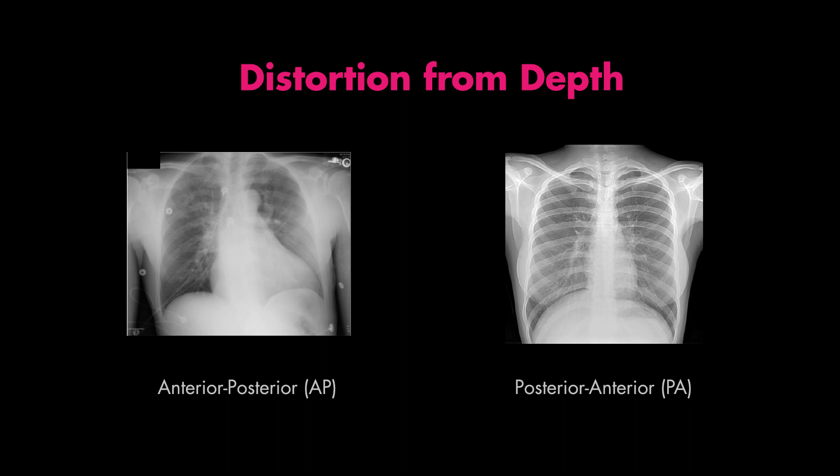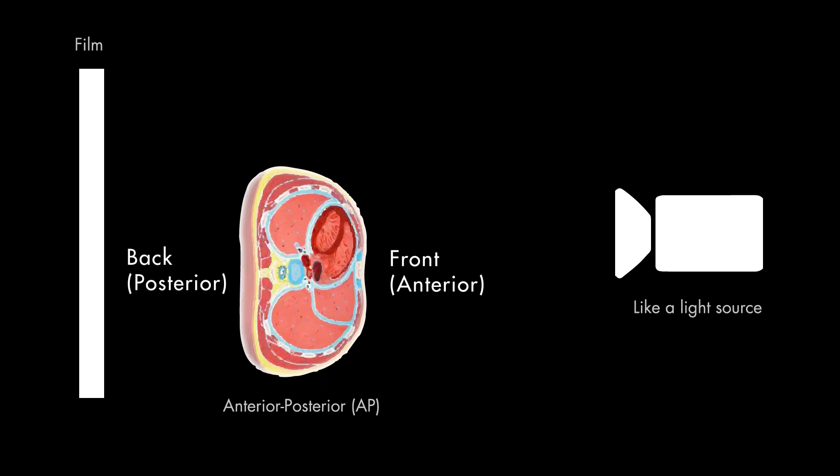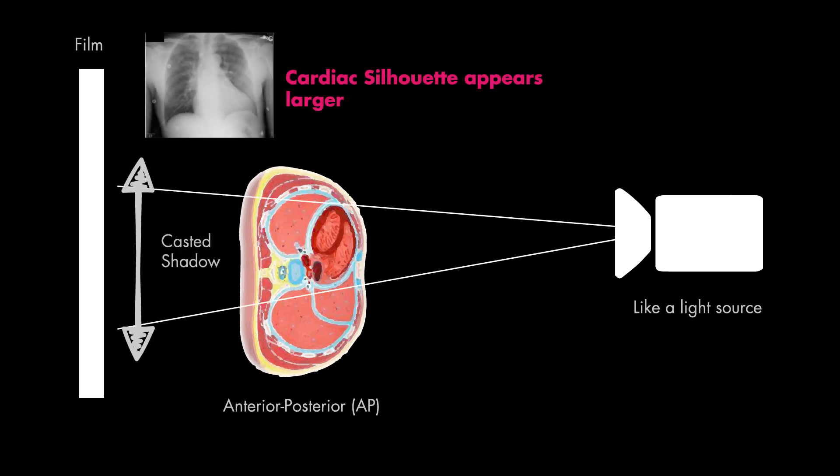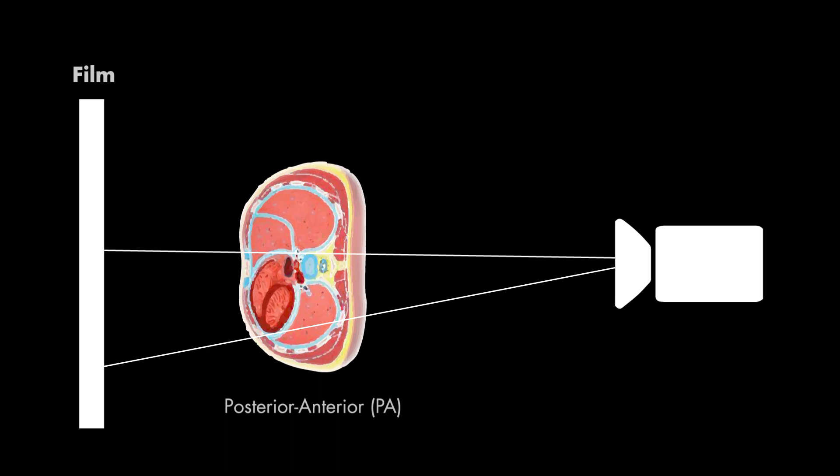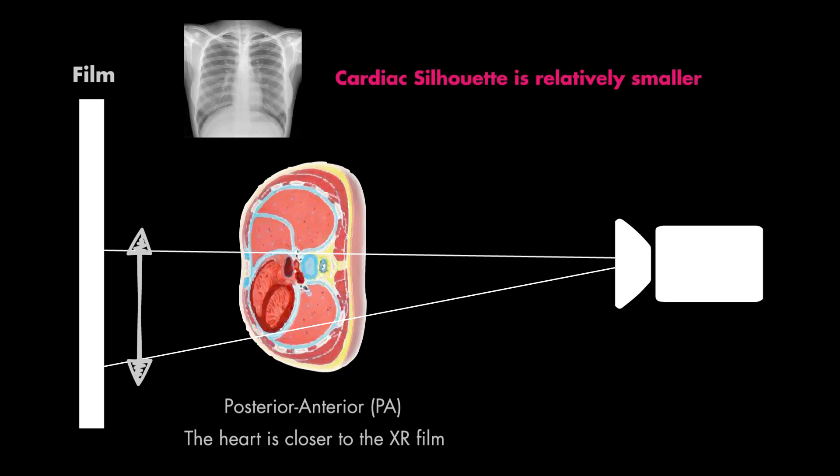The last reason it's important to know what type of film you're looking at is that if a film is shot anterior-posterior, things in the body that are more anterior — such as the heart — may appear larger compared to the same film shot posterior-anterior. If you think of the x-ray as casting a shadow, this will make more sense. The place you choose to shoot the x-ray is like a light source, and the x-ray will capture the shadow on the film. Shooting from front to back produces a larger shadow of the cardiac silhouette because the heart sits more anterior in the body. A posterior-anterior film will make the cardiac silhouette appear smaller, because of the position from which the film was shot relative to the structure.